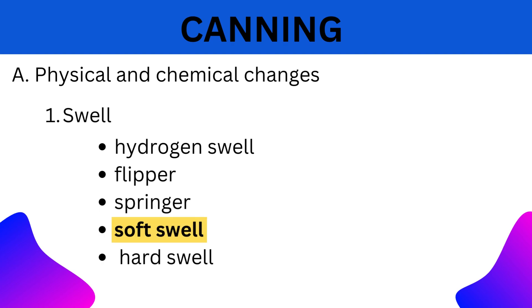4. Soft Swell: At a more advanced stage, swell develops at both ends of the can which can be pressed and returned to the normal position, but springs back when the pressure is removed. The swell of this type is termed as soft swell.